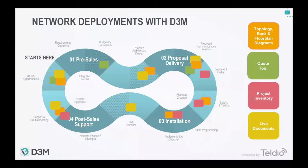The D3M app is really composed of six components: three different types of diagrams — topology, rack, and floor plan — plus a quote tool, project inventory management, and live documents to share with customers. These components map to the different stages of the customer cycle, from pre-sales through post-sales support, so D3M can help you manage the entire customer journey.